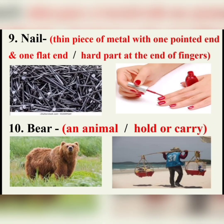And then 'nail' — a thin piece of metal with one pointed end and one flat end. If we want to hang a picture or something, we need a nail to hold it. And the other meaning of nail is the part at the end of a finger. Next word is 'bear' — it's an animal. And then bearing the weight means to hold or carry the weight. You can understand with the help of a picture.